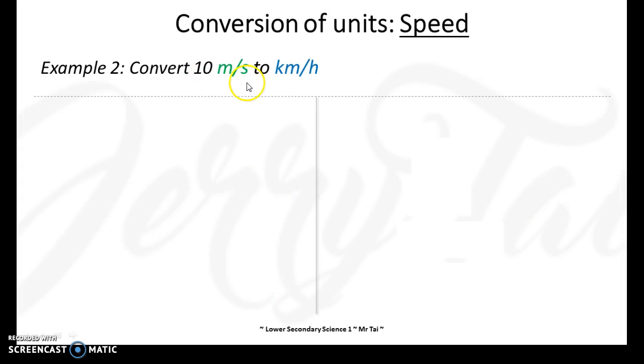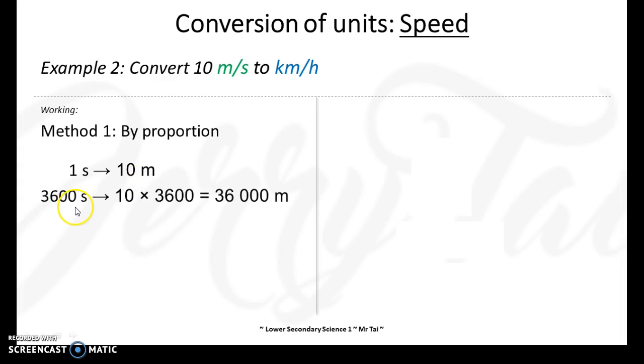Now, convert 10 meters per second to kilometers per hour. Again, two methods by proportion. One second, 10 meters. 3,600 seconds will give me 36,000 meters.